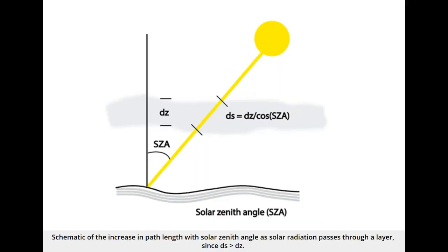For the atmosphere, the absorbers are often arranged in atmospheric layers. The stratospheric ozone layer is one example. In this case, the layer thickness is called DZ.